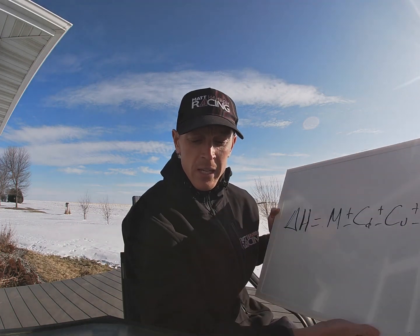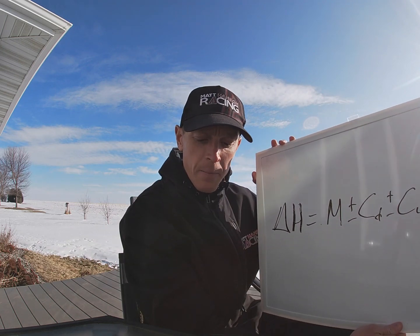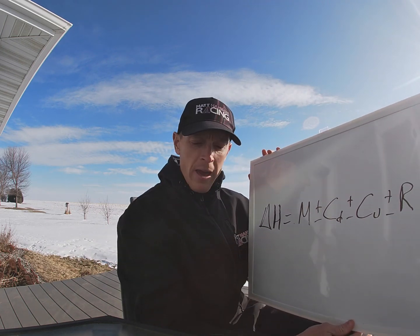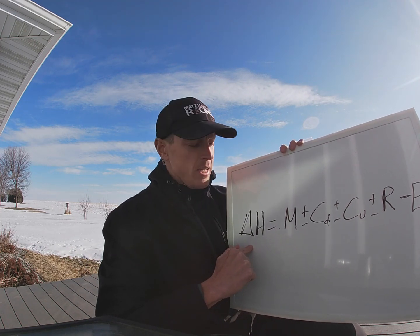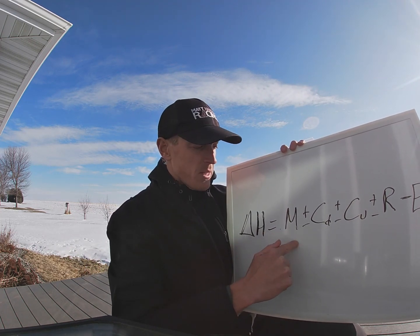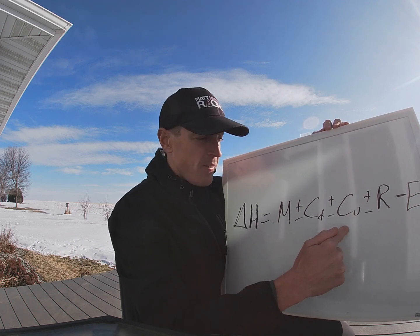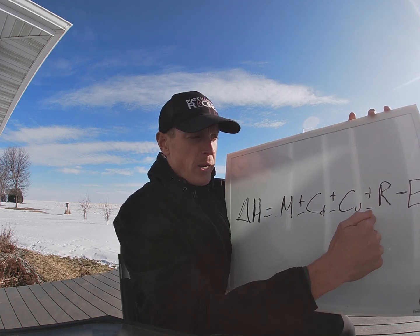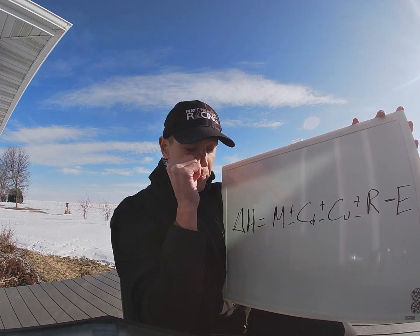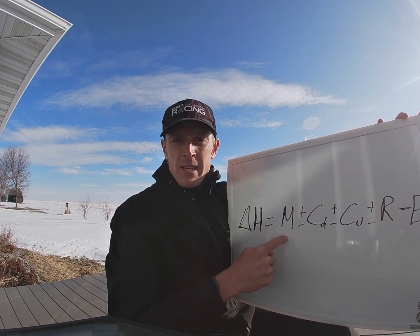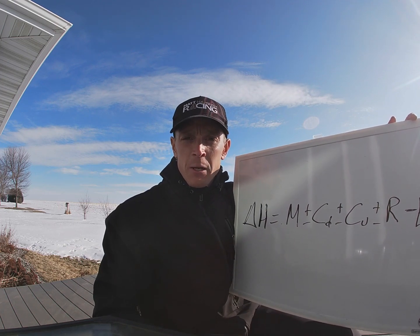The first thing we're going to show is the heat equation. Basically, what we have is delta H, or change in heat, equals metabolism, plus or minus conduction, plus or minus convection, plus or minus radiation, and then minus evaporation. Metabolism is how we generate heat.